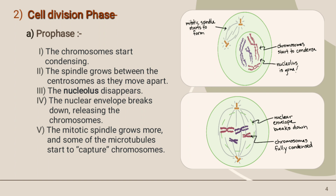The cell division phase is divided into four phases: first is Prophase, then Metaphase, then Anaphase, and then Telophase. In Prophase, the chromosomes start condensing.